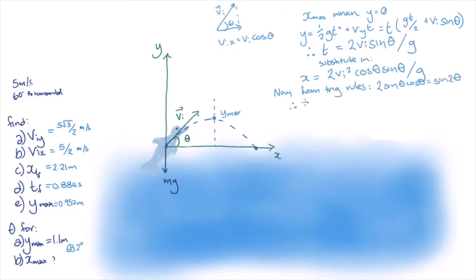Making this replacement, the range simplifies down to x equals vi squared times sin of 2 theta over g. Since vi and g are fixed, the maximum x occurs when sin of 2 theta is maximized.